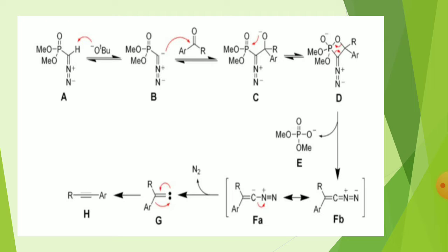The carbene intermediate undergoes rearrangement to give the alkyne product (H). Summary: first, deprotonation → anion; then carbonyl attack → oxygen attacks phosphorus; then oxyphosphonate formation; then dimethyl phosphate elimination; then vinyl diazo (F) formation; then carbene formation and 1,2-carbon rearrangement giving the alkyne.